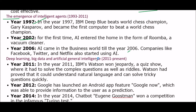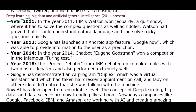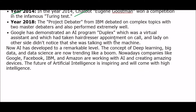Deep learning, big data, and artificial intelligence is the next phase, from 2011 to the present. In 2011, IBM's Watson competed on Jeopardy, where it had to solve complex questions and riddles. Watson proved it could understand natural language and solve tricky questions quickly. In 2012, Google launched an Android app feature called Google Now, which could provide information to the user as a prediction. In 2014, a chatbot named Eugene Goostman won a competition in the famous Turing test. In 2018, IBM's Project Debater debated complex topics with two master debators and performed extremely well.